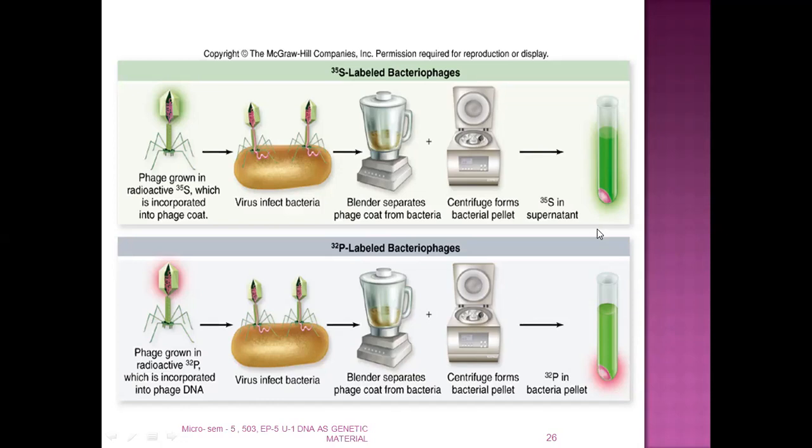I hope you are all clear with this experiment. Each of the three experiments — Griffith's transformation experiment, Avery MacLeod and McCarty's experiment, and Hershey and Chase's experiment — can be individually asked as three-mark or five-mark questions. The whole topic proving that DNA is the universal genetic material can also be asked as a full-mark question, along with MCQs, fill in the blanks, and short questions. Start preparing your notes accordingly.